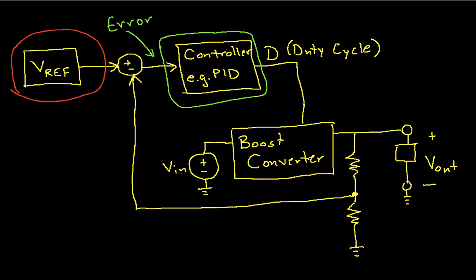It changes or it looks at the error between what we have and what we want, and responds to that error by changing D, which is the duty cycle of a pulse-width modulated waveform.